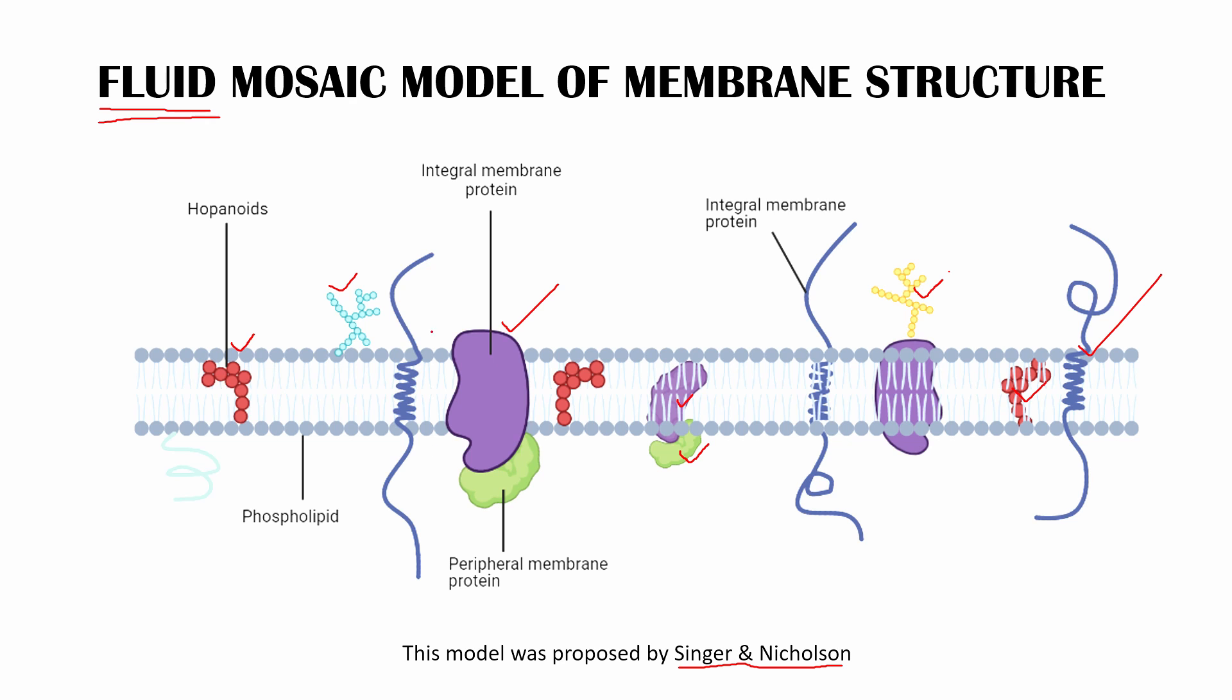Now this is basically a cross section of the plasma membrane and this is the outside. This is the outside, you can say, and this is the inside. That's the outside of the cell and this is the inside of the cell. So all the components you are seeing, they are constantly moving.